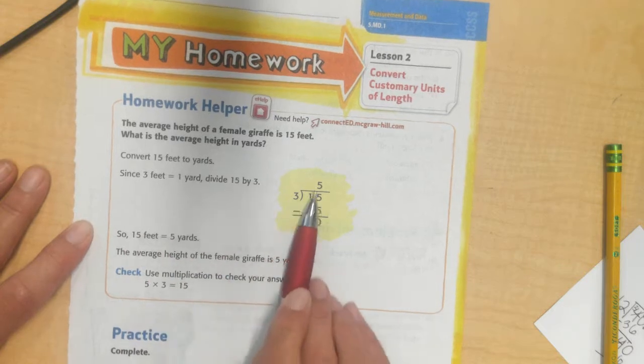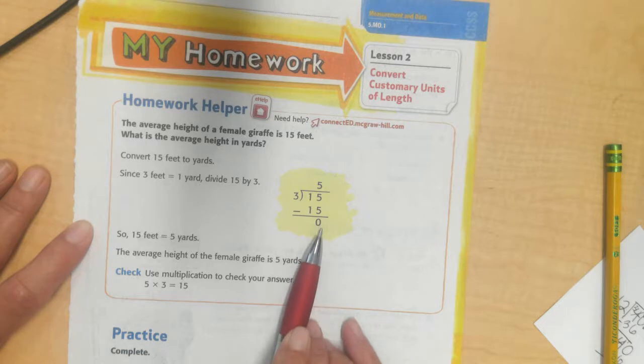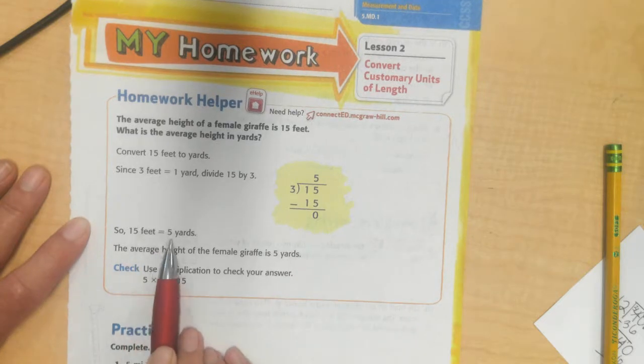3 goes into 15. 5 times 3 is 15. I subtract, I get 0. So, 15 feet is 5 yards.